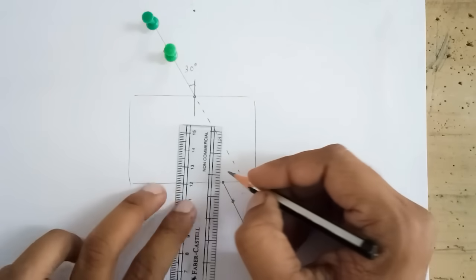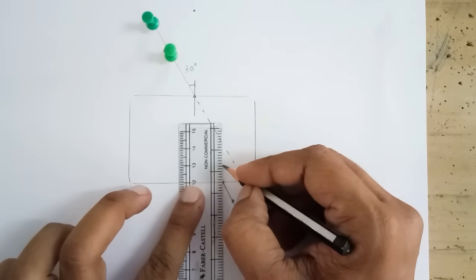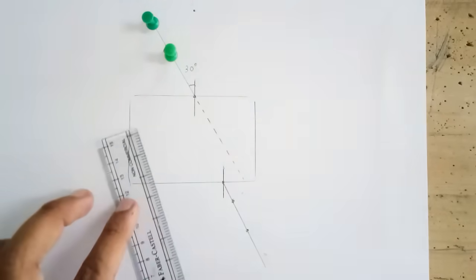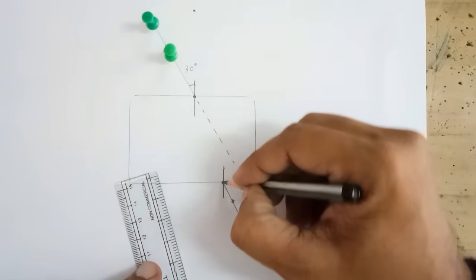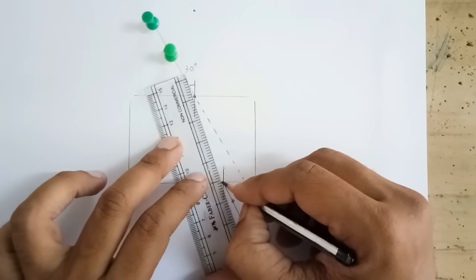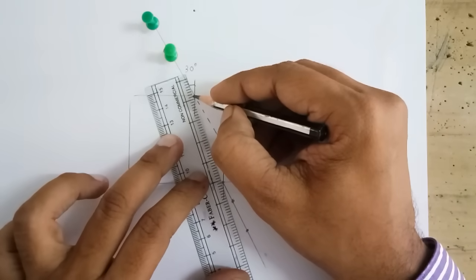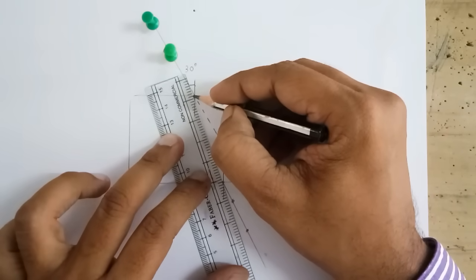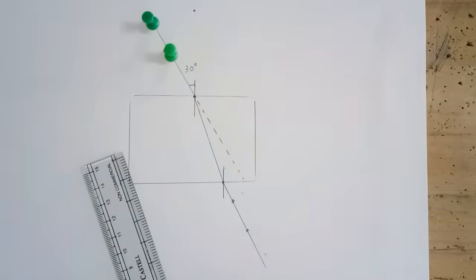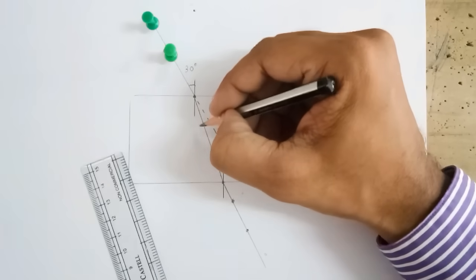This is the point of incidence again a normal. Now, this point and this point are supposed to be connected like this.